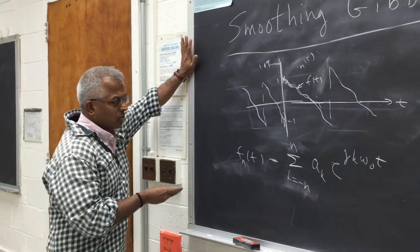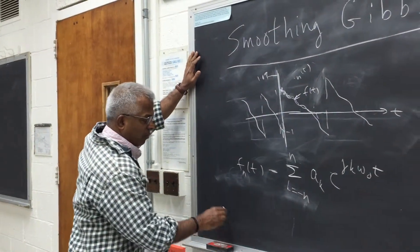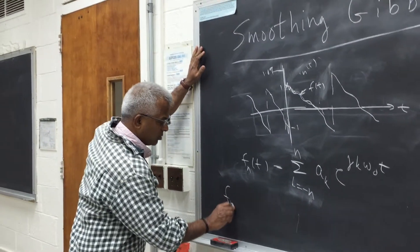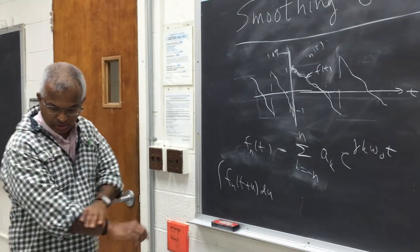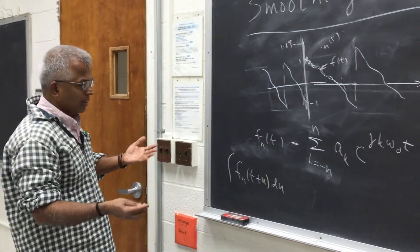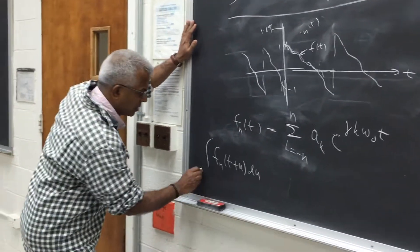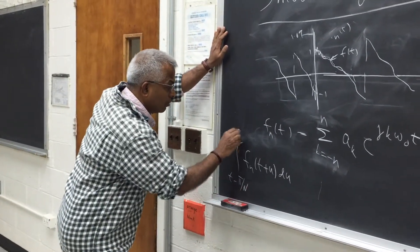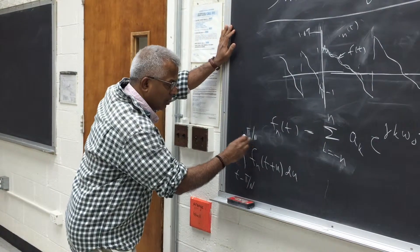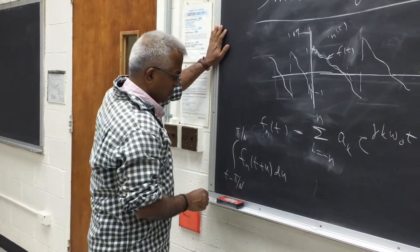Now if you want to smooth it you can do the following. Suppose we take this function and do a small window around each point. Let's say if you are at t you make a window from 5 over n to minus 5 over n to n. Whatever is the n we will see this.